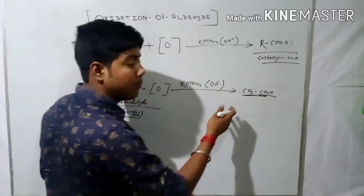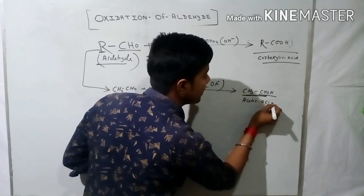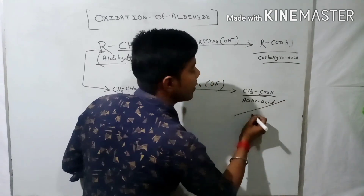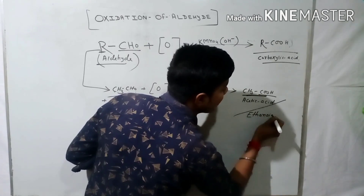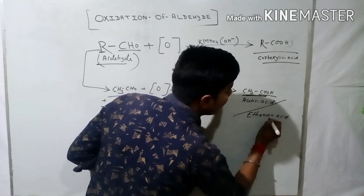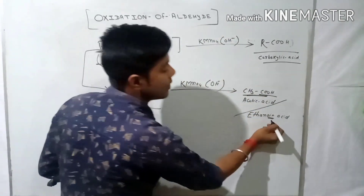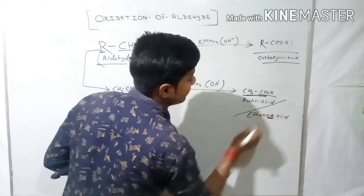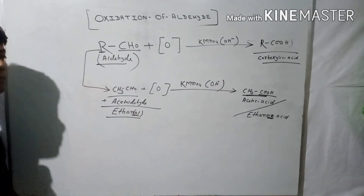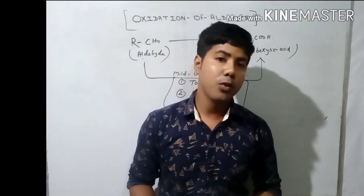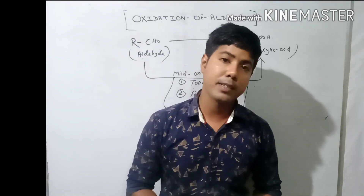The common name of CH3COOH is acetic acid, and the IUPAC name is ethanoic acid — E-T-H-A-N-O-I-C — because the suffix of carboxylic acid is -oic. I hope this video will be helpful for you. Don't forget to like, comment, and subscribe to my channel. Okay, bye!